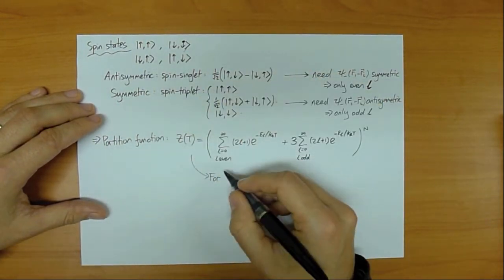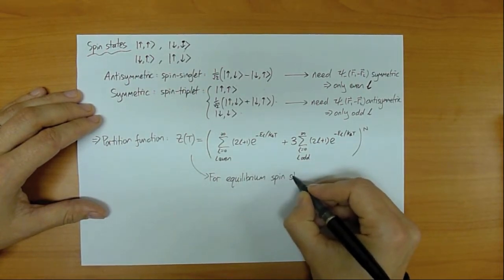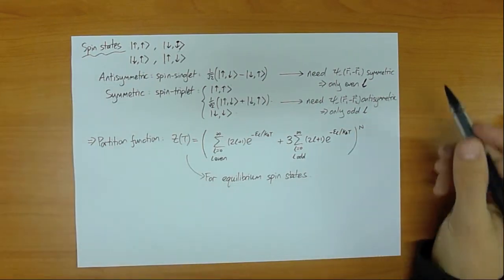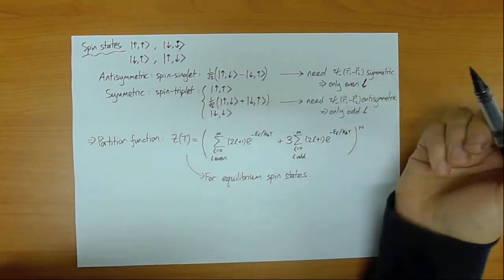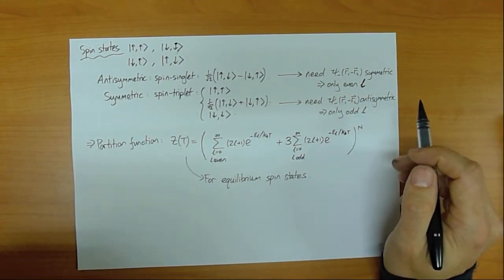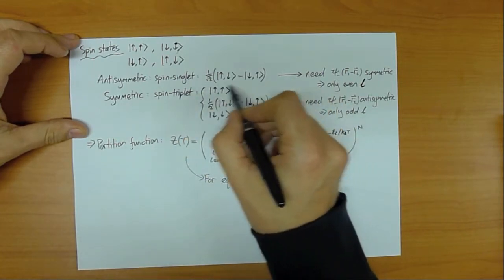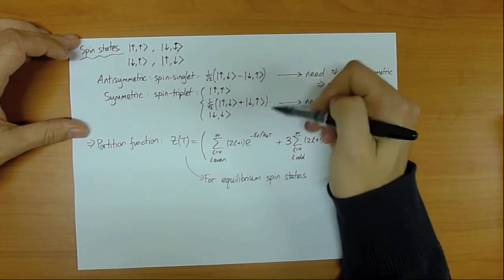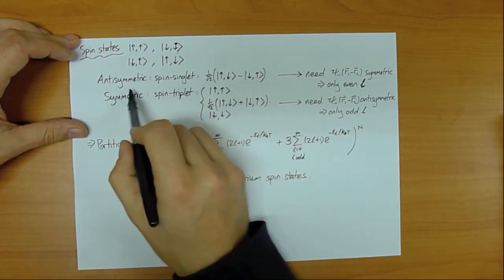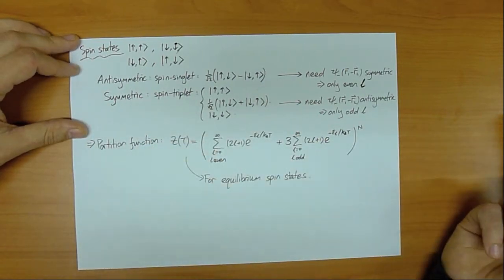This is the equilibrium result, where the spin states are in equilibrium. However, it turns out these spin states change only very slowly — to change the nuclear spin you need some kind of magnetic field to interact with, which may be difficult to find in a given environment. Therefore if you prepare hydrogen only in, say, the spin singlet state, although at equilibrium it would be a mixture of both kinds, this equilibrium takes a long time to establish. It's useful to talk about what the partition function looks like when all hydrogen molecules are in the spin singlet state or all in the spin triplet state.